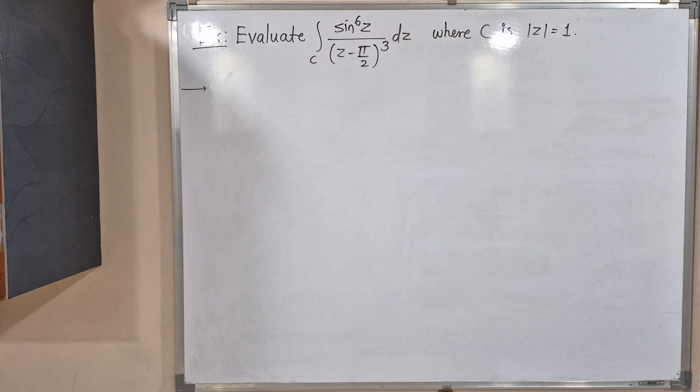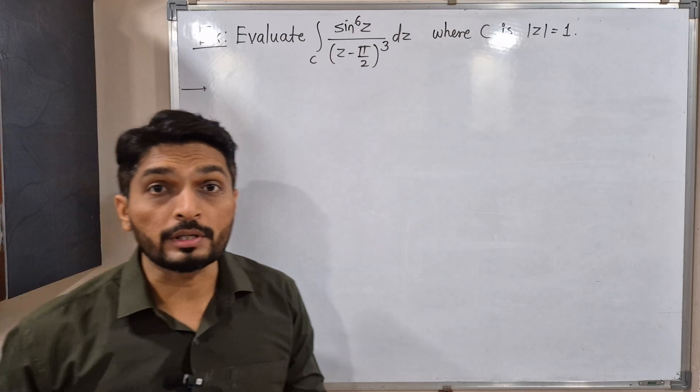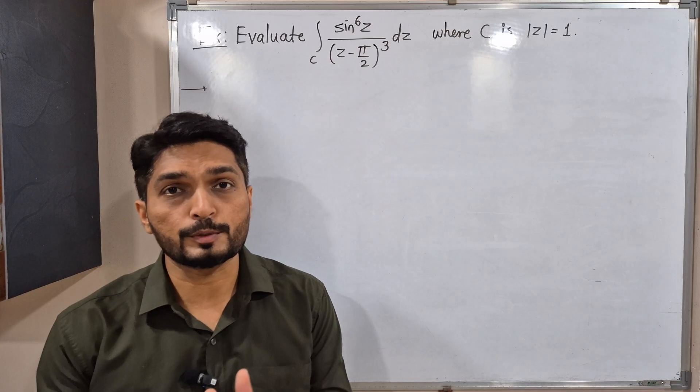So dear students, in this video we are going to solve this problem: sin raised to 6z upon z minus π by 2 raised to 3. It is looking difficult, so let us see how to solve this problem.